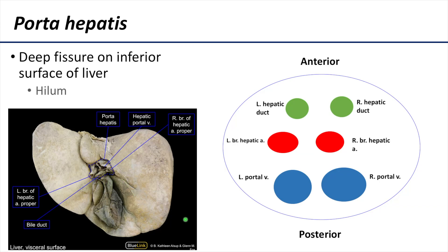The porta hepatis is a deep fissure on the inferior surface of the liver situated between the quadrate and caudate lobes. It contains the portal veins, with left and right branches of the hepatic artery, and the right and left hepatic ducts. Additionally, the hepatic plexus of nerves and lymph vessels are also associated with the porta hepatis.